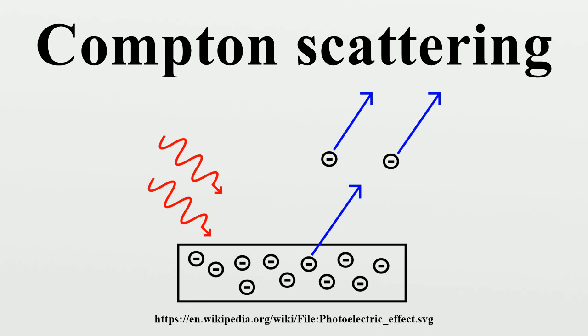If the scattered photon still has enough energy, the process may be repeated. In this scenario, the electron is treated as free or loosely bound.